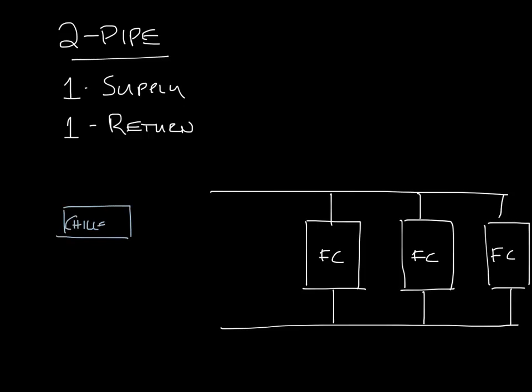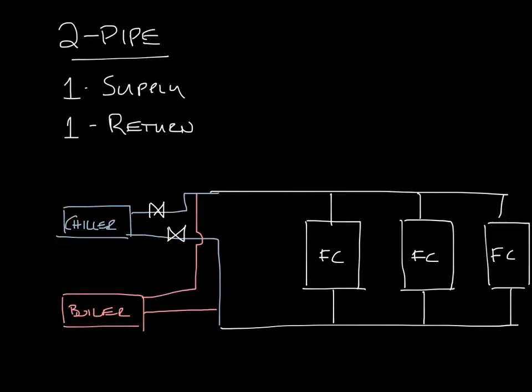So let's draw in a chiller and let's connect the chiller supply to the fan coil supply and then the return to the chiller return side. And we'll draw in a couple valves. So now let's draw in a boiler and we'll connect the return line to the return side of the boiler and the supply side of the boiler to the supply line and then draw in a couple valves here too.